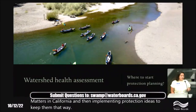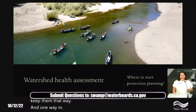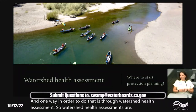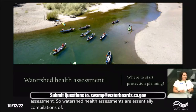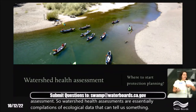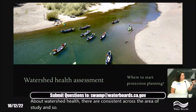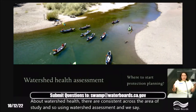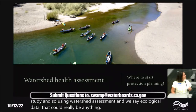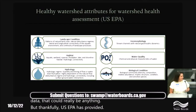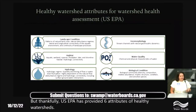One way to do that is through watershed health assessment. Watershed health assessments are compilations of ecological data that can tell us something about watershed health, and they are consistent across the area of study. US EPA has provided six attributes of healthy watersheds that we can use as the basis for watershed assessment.